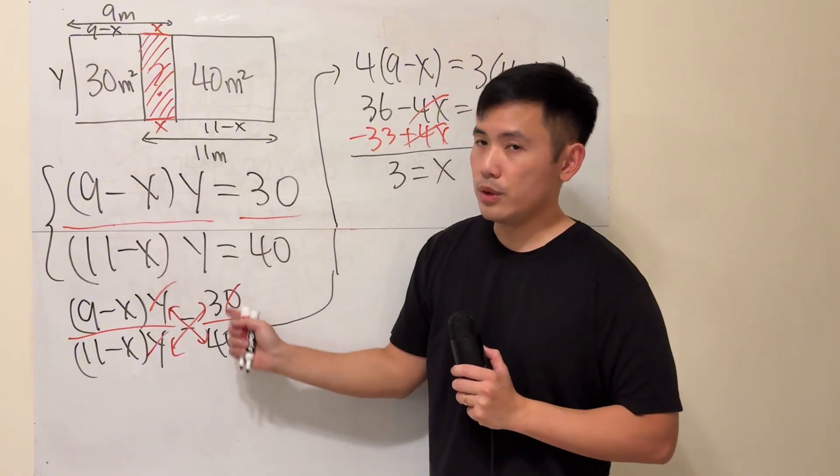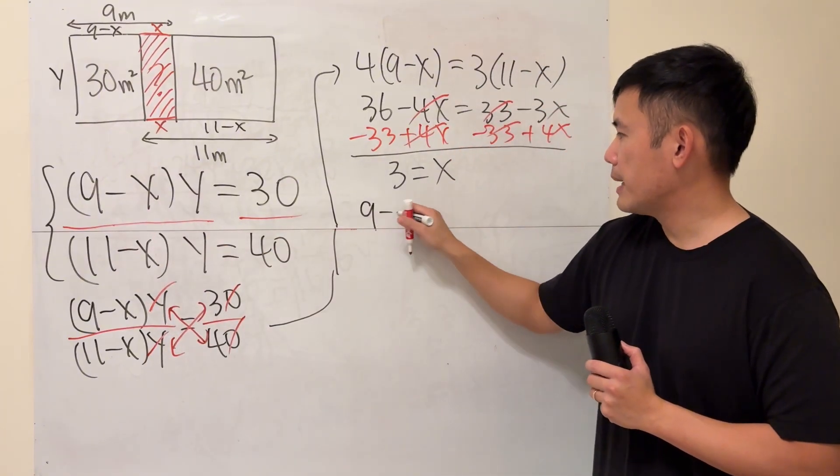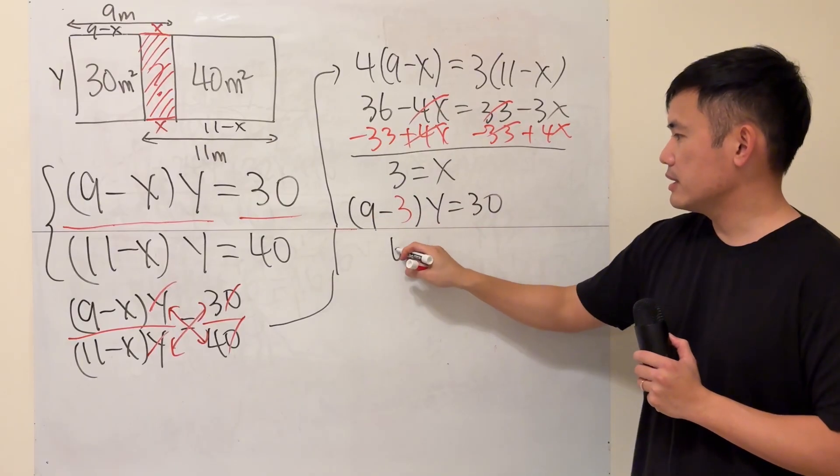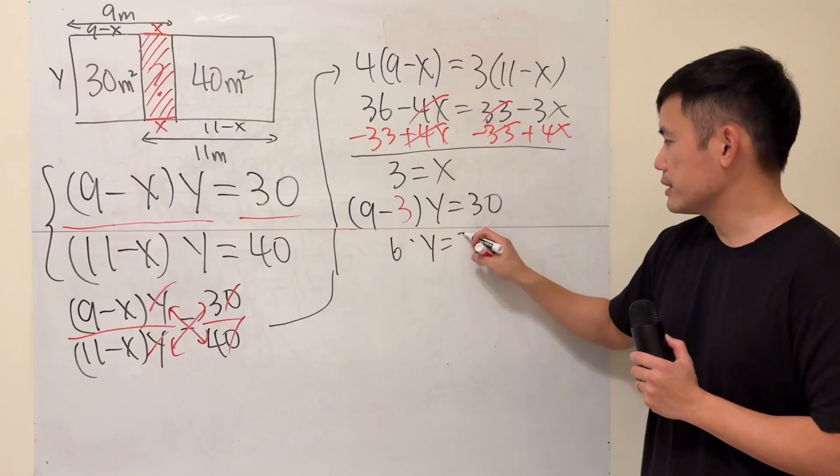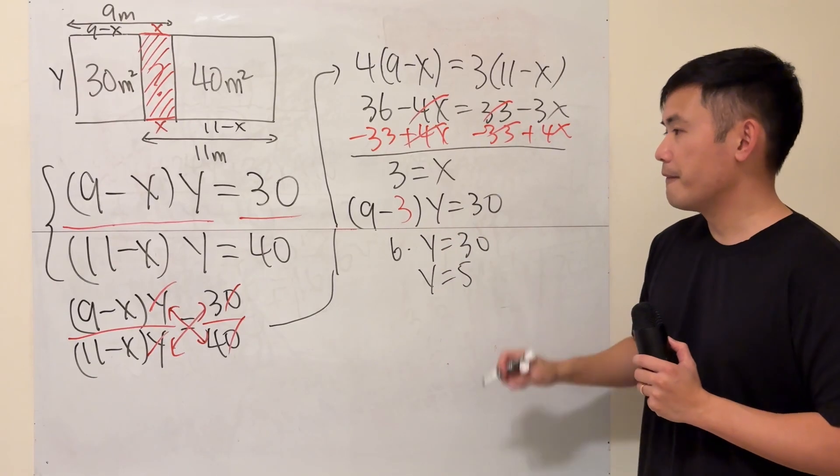into one of the equations. I'm going to use the first one. So we get (9-3) times y equals 30. That's 6 times y equals 30. Divide both sides by 6: y equals 5.